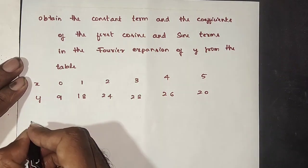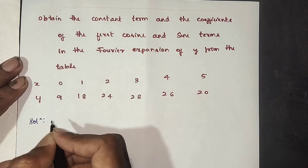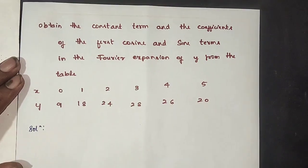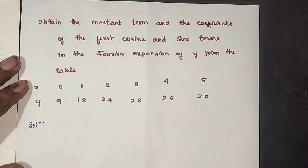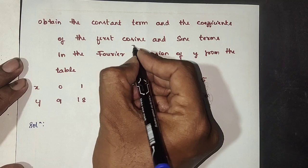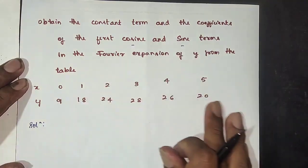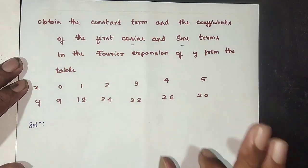Here we have the Fourier cosine and sine table. The x values are 0, 1, 2, 3, 4, 5.